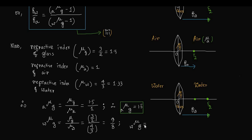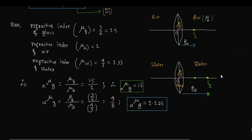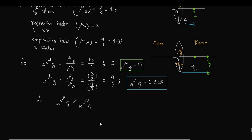Therefore, w_mu_g = 9/8 = 1.125. Since a_mu_g = 1.5 and w_mu_g = 1.125, the relative refractive index of glass with respect to air is greater than that with respect to water: a_mu_g > w_mu_g.